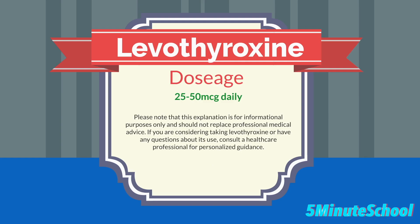The dosage of levothyroxine is individualized based on factors such as age, weight, underlying health conditions and the severity of hypothyroidism. The goal of treatment is to achieve and maintain thyroid hormone levels within the normal range. Typically, the initial dosage for adults with hypothyroidism is 25 to 50 micrograms per day, with gradual adjustments made based on blood tests and clinical response. Thyroid hormone levels should be monitored regularly, and periodic follow-ups with healthcare professionals are essential to ensure proper dosage adjustment and manage any potential side effects.